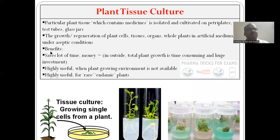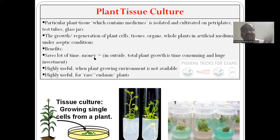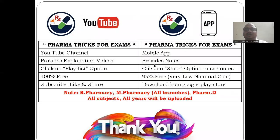Plant tissue culture — here, for a particular plant, we are not growing the entire plant outside. The part which is having medicinal property, only that part we will cut and bring to the laboratory. We will try to grow it in a petri dish, tissue tubes, or glass jars. Benefits: it saves a lot of time and money, because growing the total plant outside is time-consuming and requires a lot of investment, manpower, and machine power. In the laboratory, whichever part you want, you cut it and grow it in tissue. This is highly useful for rare and endemic plants. So I will end my session here.